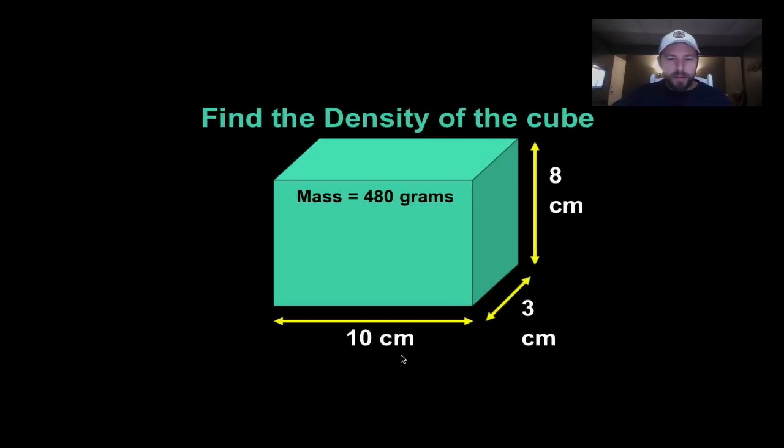Okay. Here's a problem right here, finding the density of this cube. So we have here, the first thing we write is density equals mass over volume. And we're going to start substituting in, just like we did with the rate of change the other day.